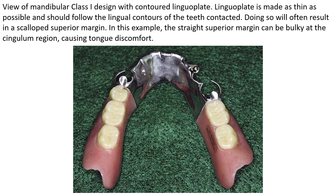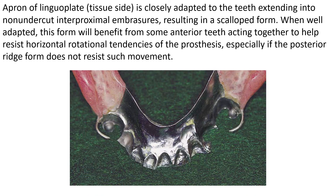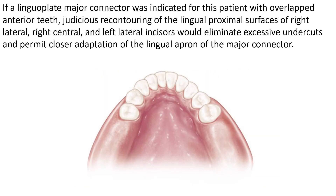A view of a mandibular Class I design with a contoured linguaplate is shown. The linguaplate is made as thin as possible and should follow the lingual contours of the teeth contacted, often resulting in a scalloped superior margin. The tissue side of the linguaplate apron is closely adapted to the teeth, extending into non-undercut interproximal embrasures. When well adapted, this form benefits from anterior teeth acting together to help resist horizontal rotational tendencies of the prosthesis.